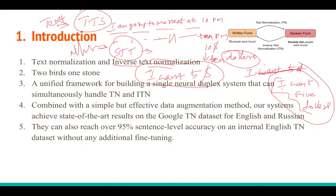Many companies building speech recognition APIs — like Google and Amazon AWS — use inverse text normalization as a post-processing technique to make output more readable. Speech recognition is a neural network-based algorithm, and similarly we need some kind of model to do this task.